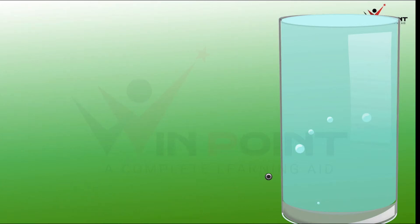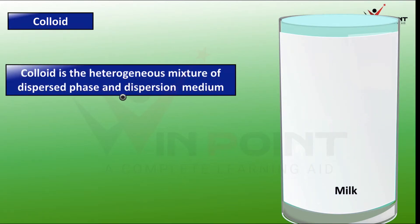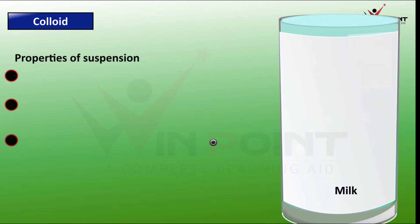Next is colloid. An example of colloid is milk. Comparing colloid with solution — a solution was a homogeneous mixture of solute and solvent, like sugar in water. But colloid is heterogeneous. Milk looks homogeneous but it is actually heterogeneous. Colloid is a heterogeneous mixture of dispersed phase and dispersion medium. The particles present in the milk form the dispersed phase, and the liquid part is the dispersion medium.